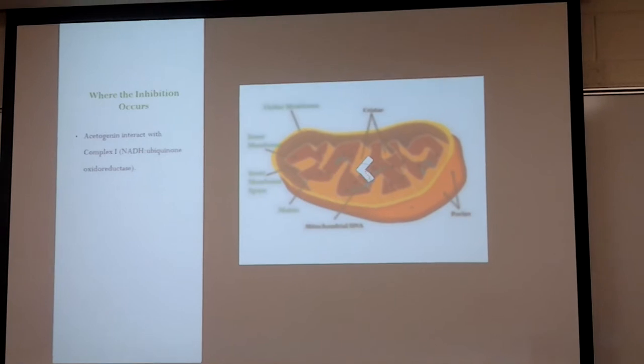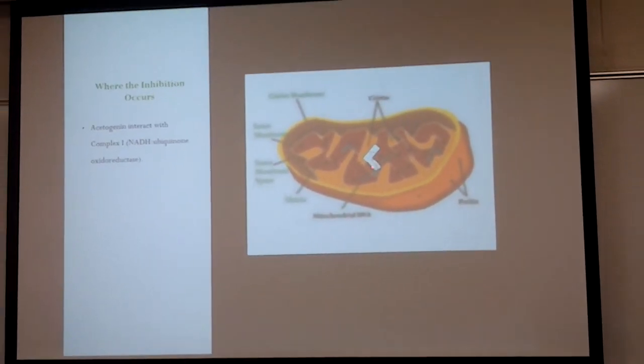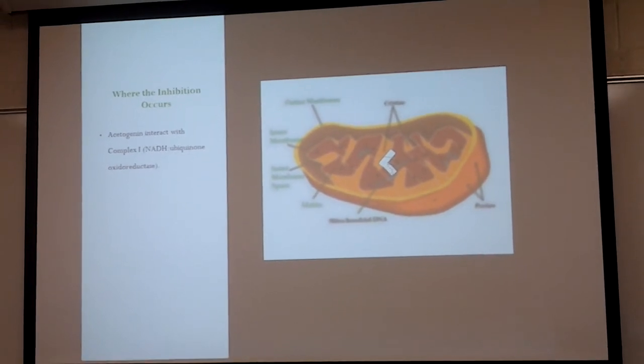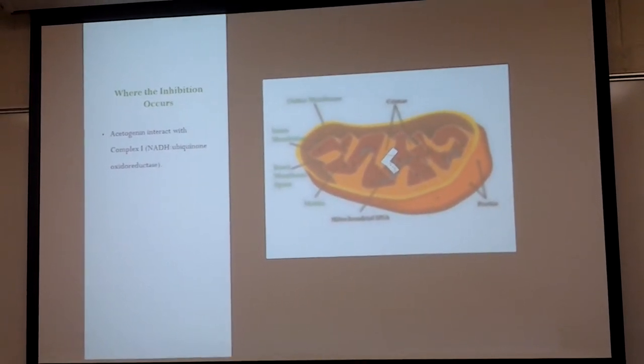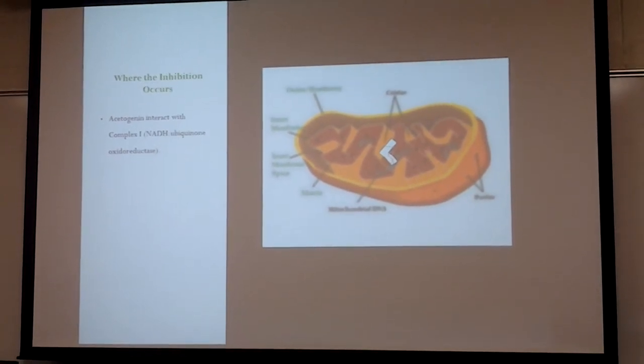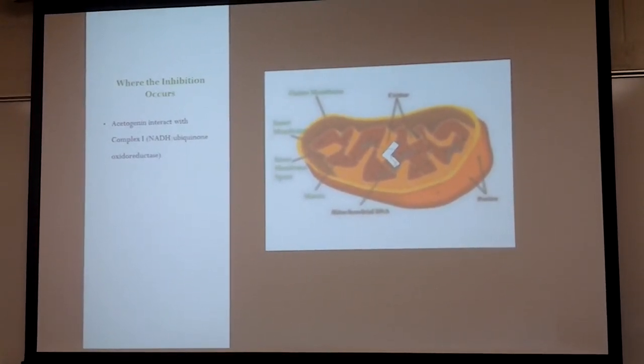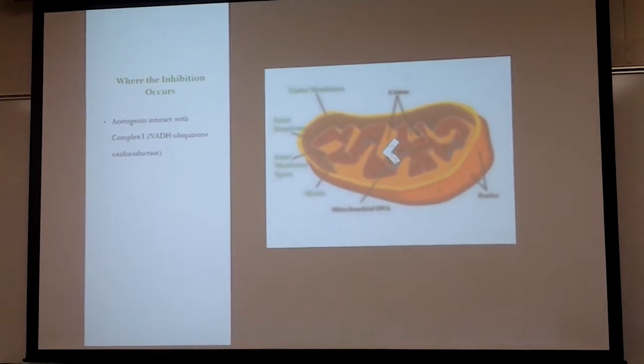Acetogenins interact with complex I. Complex I is this figure right here, as you can see. It is also known as the NADH ubiquinone oxidoreductase. Complex I is essential to energy production within the mitochondria.